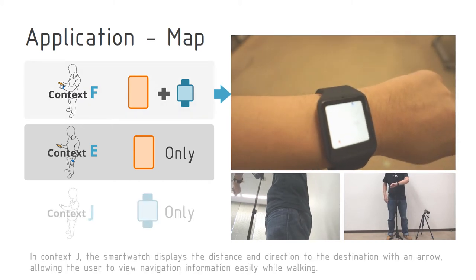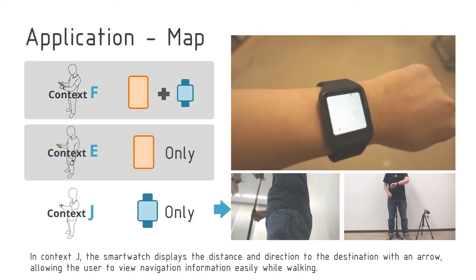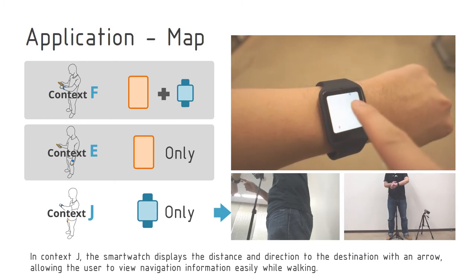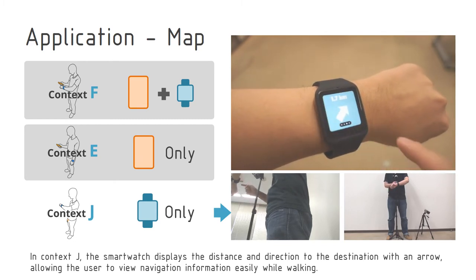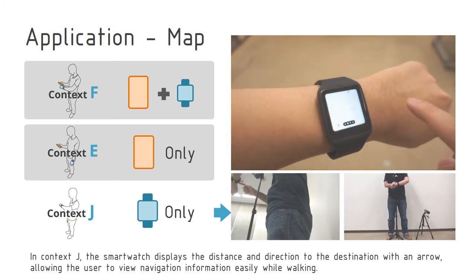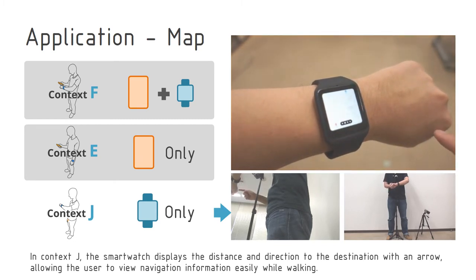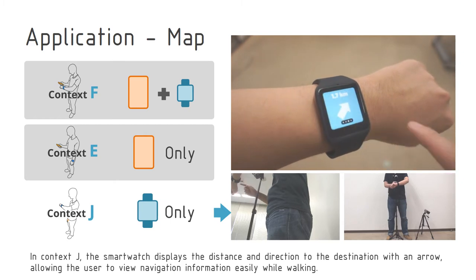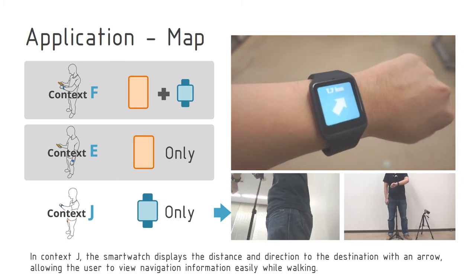In context J, the smartwatch displays the distance and direction to the destination with an arrow, allowing the user to view navigation information easily while walking.